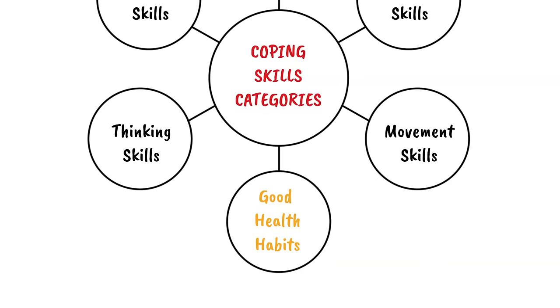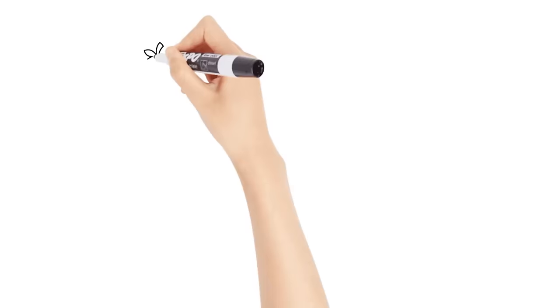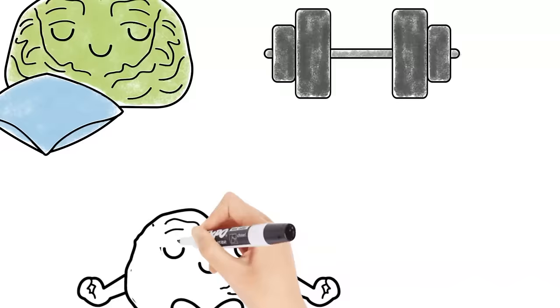Number three, good health habits. Health habits are a very important shield to help defend against anxiety. If you have poor health habits, then your brain and body are less able to manage anxiety when it comes up. Good health habits include eating well, sleeping well, movement or exercise, stress management skills, and reducing caffeine or energy drinks.